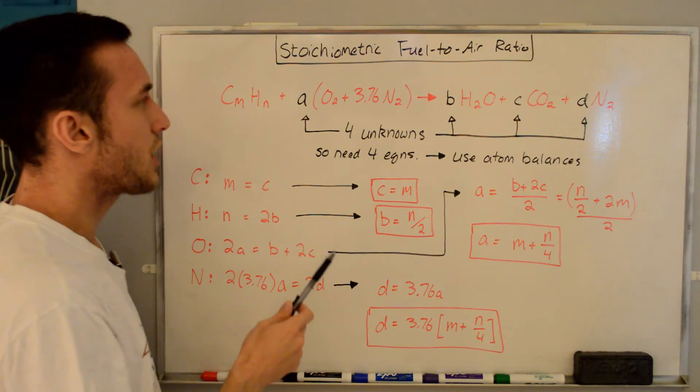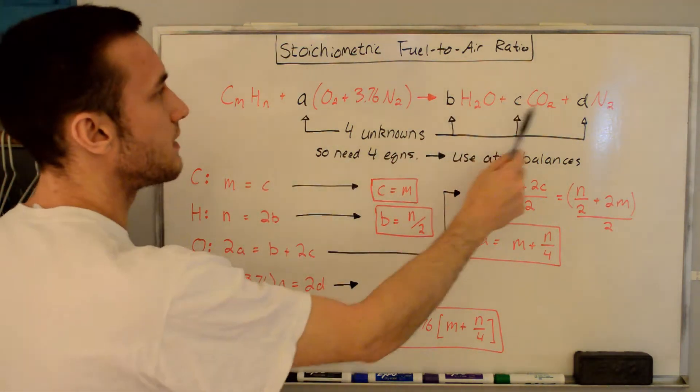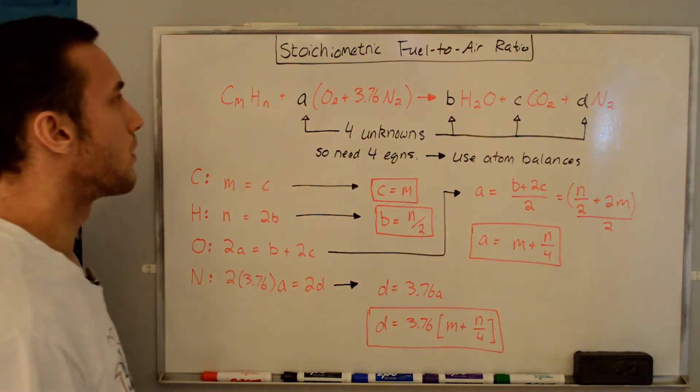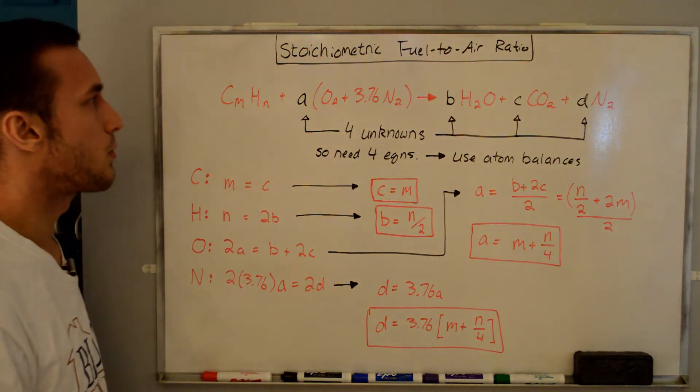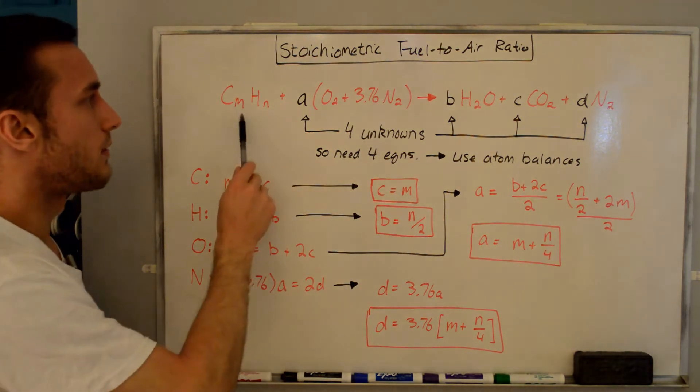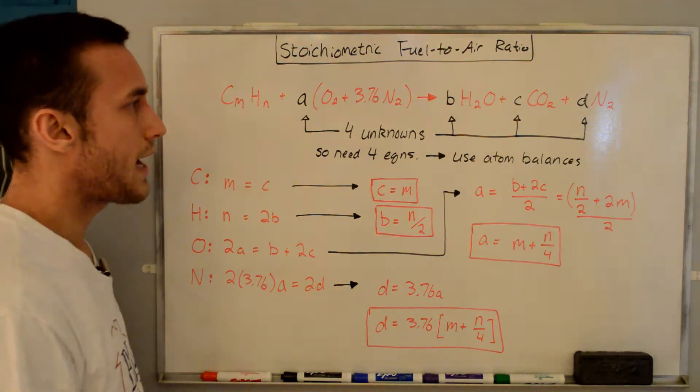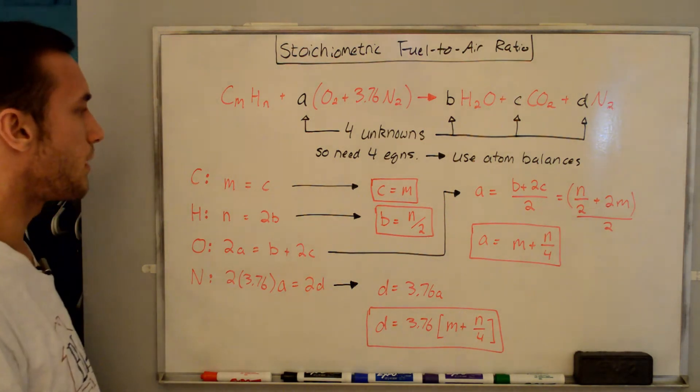So here I've rewritten the global reaction with the unknowns in black. We don't know A, B, C, and D. That's what we're trying to solve for. We do know M and N because we'll know what fuel type we're using. So we're trying to solve for A, B, C, and D in terms of M and N. And since we have four unknowns, we're going to need four equations, and we'll use atom balances. So we'll start with the atom balance for carbon.